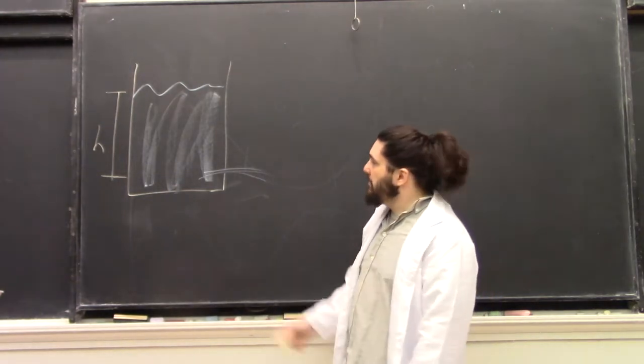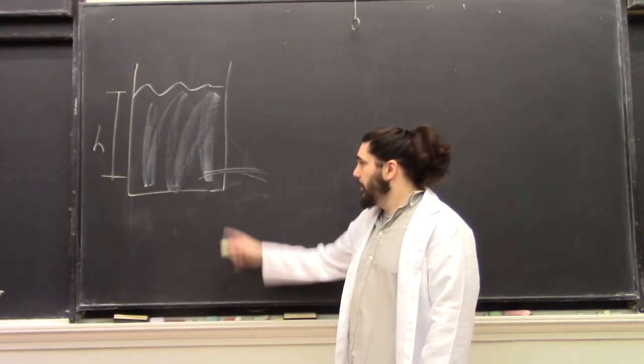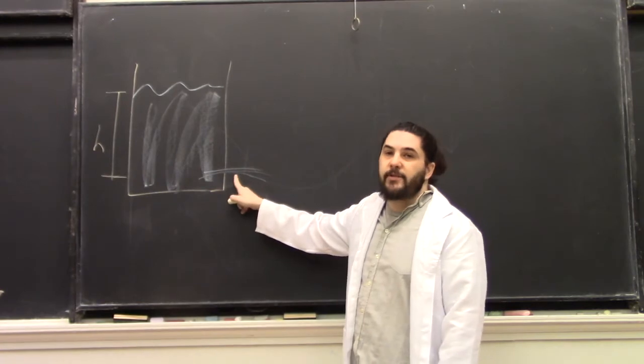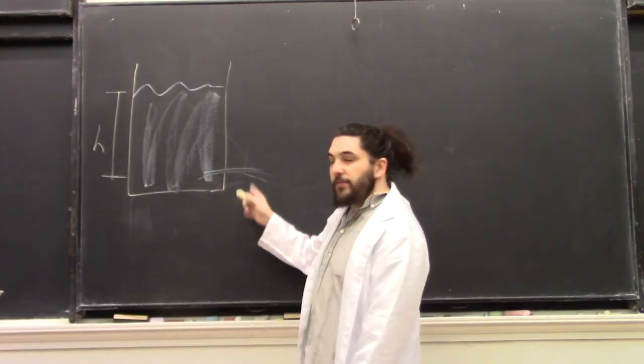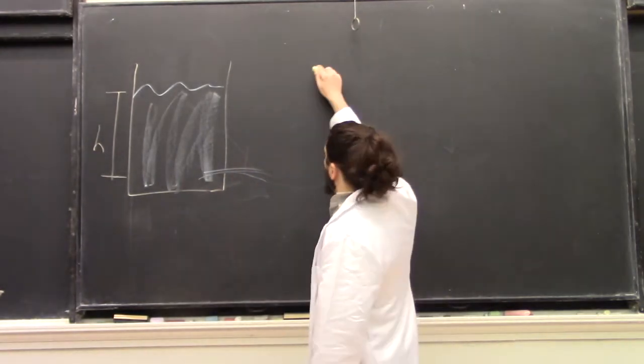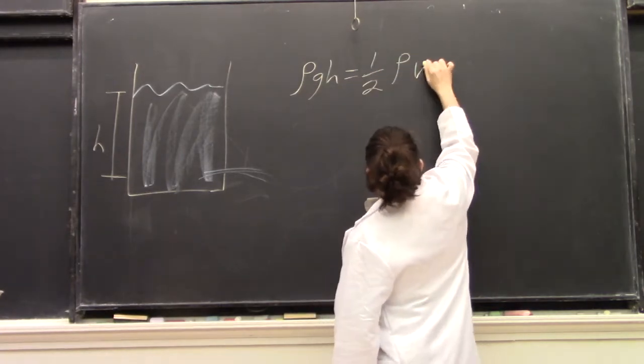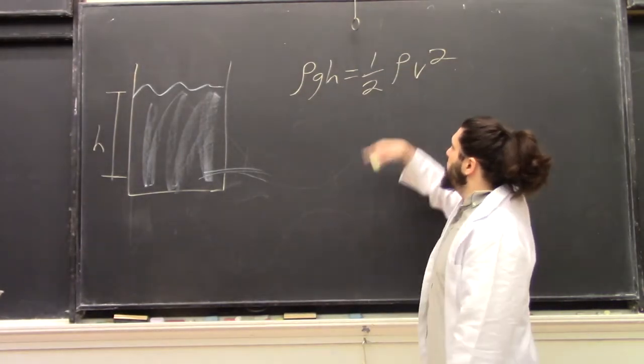The Bernoulli equation tells us that if we have a bucket full of fluid with a hole punched in the bottom for it to flow out of, the equation for that flow speed is going to look something like rho gh equals one half rho v squared.